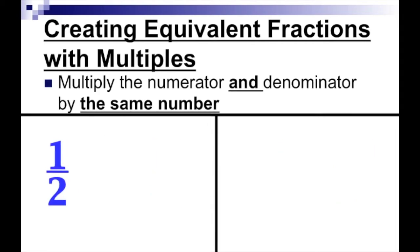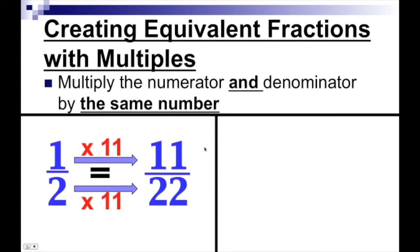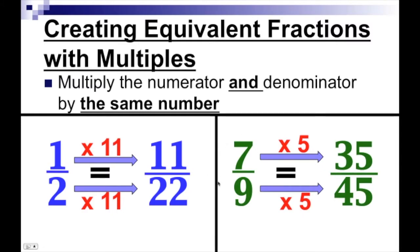Here we have one-half. Let's multiply the top and bottom by eleven — that's going to give us eleven over twenty-two. So one-half is equal to eleven over twenty-two. For seven-ninths, we can multiply the top and bottom by five, giving us thirty-five over forty-five. So seven-ninths is equivalent to thirty-five over forty-five.